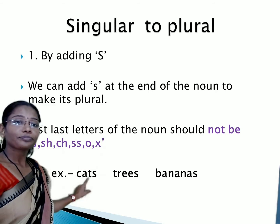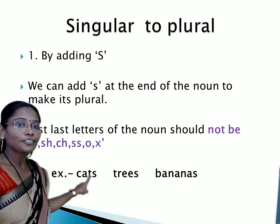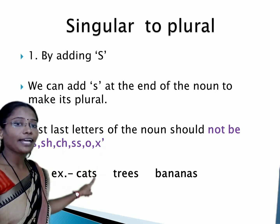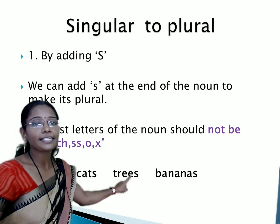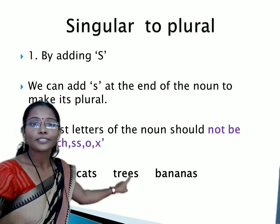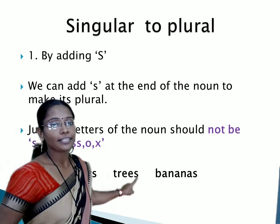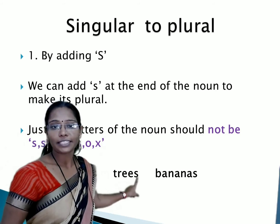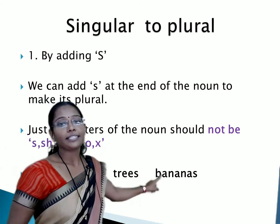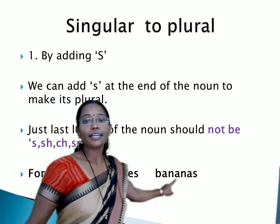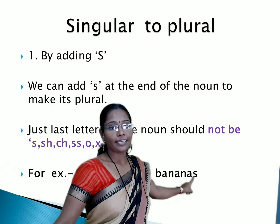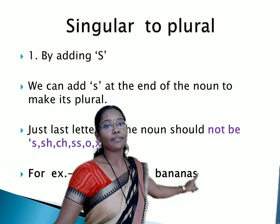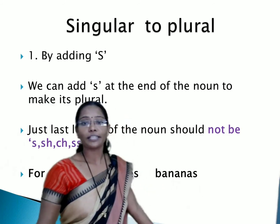For example: cat — ending letter is T, so directly we can add S; it will become cats. Tree — ending letter is E, so directly we can add S; it will become plural — trees. In the same way, banana — the last letter is A, so directly we can add S and make its plural — bananas.